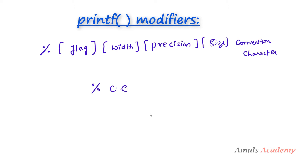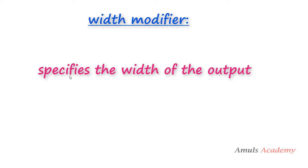We will discuss about these 4 modifiers in detail with examples. First we will talk about the width modifier. I'm not starting with flag because, while giving the example for flag, if we already know about width and other modifiers then it is easier to understand. The width modifier is used to specify the minimum number of positions that the output will take. If we don't mention this width modifier, the output will take just enough position or width required by the output data.